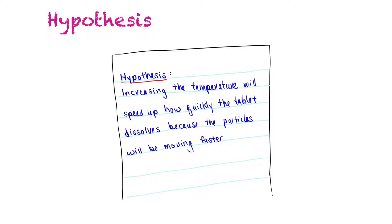The next component of a lab report would be to write a hypothesis, and again this will be written before you do your experiment. A hypothesis is an explained prediction — you're making a guess, but it's an educated guess about what you think is going to happen. You're also going to use some of your background knowledge to help explain your hypothesis.